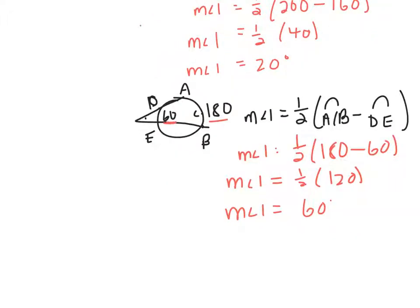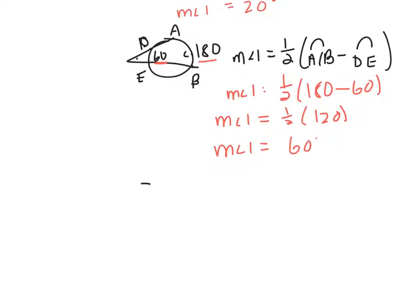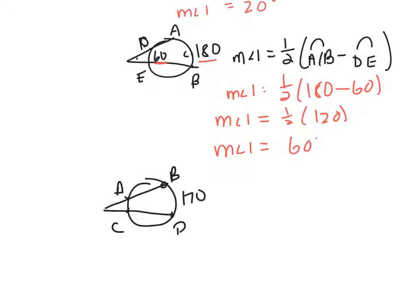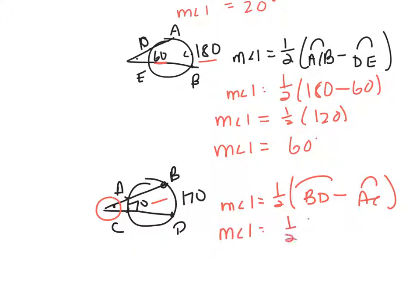The last one we look at — because they all have the same property, they just look different — is when I have two secants. I'm going to call them A, C, and D. Let's say arc BD is 170 and arc AC is 70, and we're looking for angle 1. Because angle 1 is on the outside, I'm going to take one half and subtract outer minus inner. So the measure of angle 1 is one half of arc BD minus arc AC, which is one half of 170 minus 70, which is one half of 100, so it's 50 degrees.